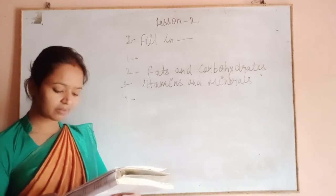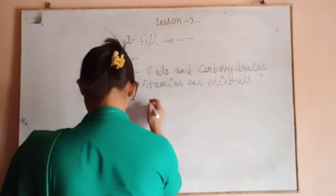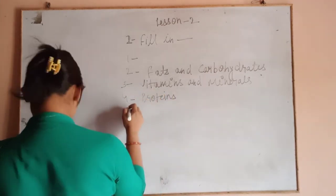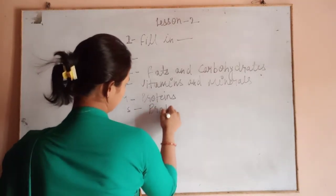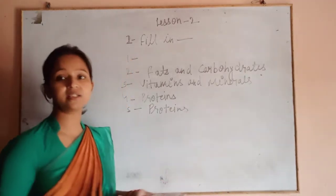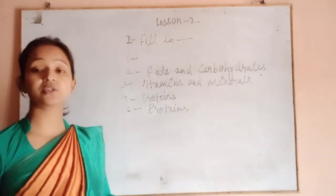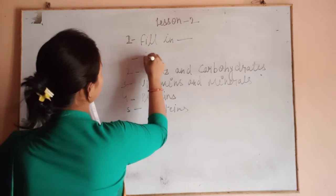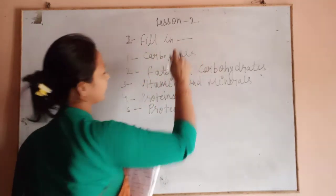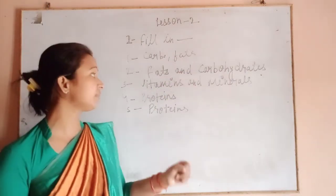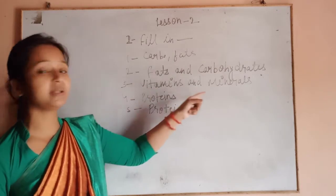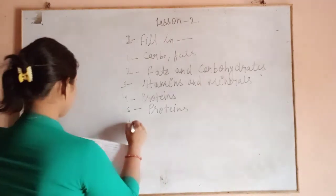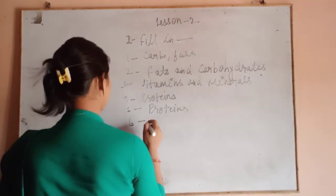The fourth blank: body-building foods are proteins. The fifth blank: pulses are a source of vitamins and minerals. The sixth blank: potato and rice are sources of carbohydrates in our diet.